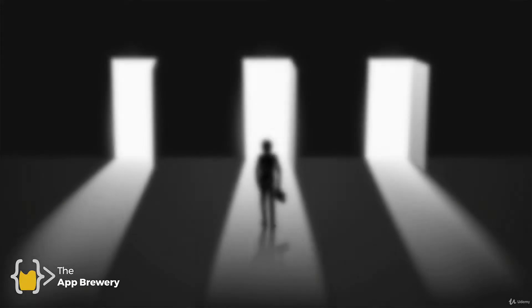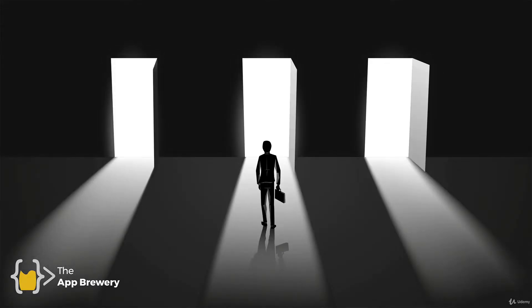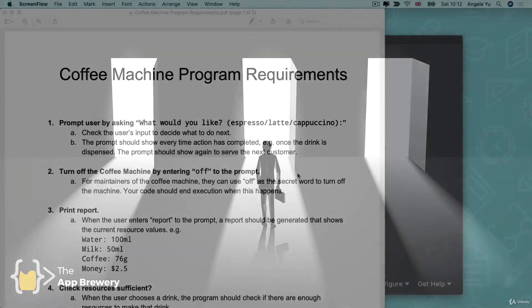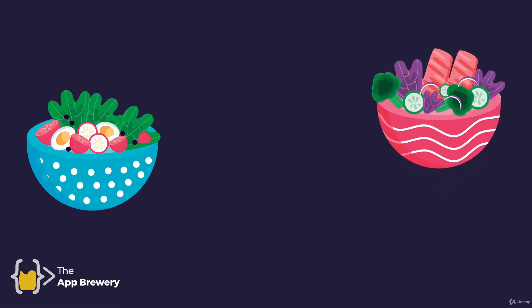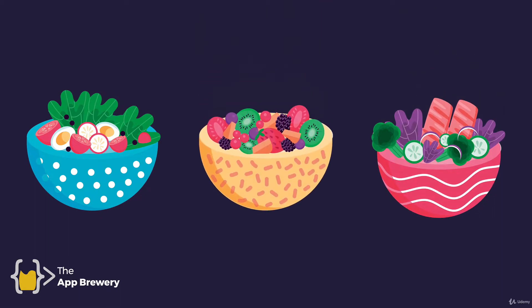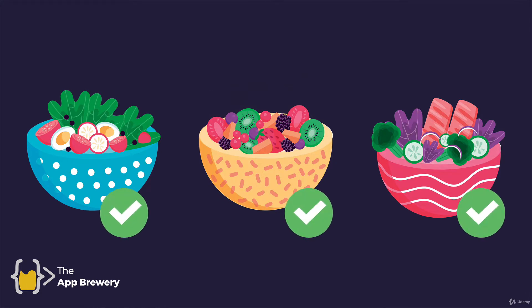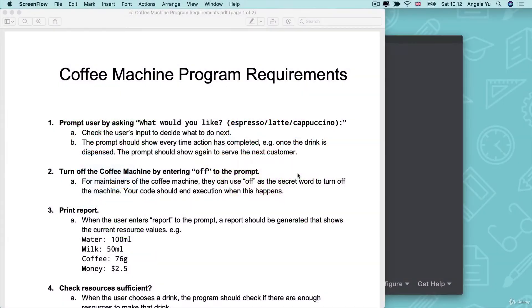There are so many possible solutions to create this coffee machine program satisfying all the requirements. The way that you code it up is essentially your choice — whether you decide to use a while loop, a for loop, or a different data structure, there are endless possibilities. What I'm going to show you now is just one of those possibilities. What's really important is you don't feel like you've done it wrong just because it's different to mine. As long as it works the way that you expect it to, consider yourself successful.